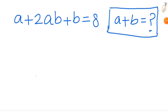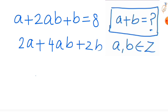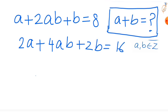Welcome to my channel. We start with the equation a² + 2ab + b² = 8, and we have to find a + b, where a and b are integers. Multiply the entire equation by 2 to get 2a² + 4ab + 2b² = 16.